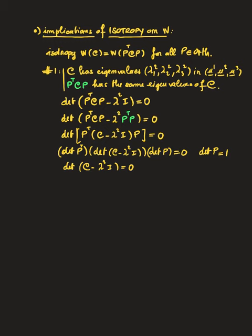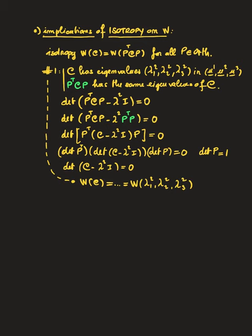So the eigenvalues of C are exactly the same as the eigenvalues of P^T C P — they are unaffected by rotations. The first consequence is that W(C) can be written simply as a function of the three eigenvalues λ₁², λ₂², λ₃². Initially we thought the energy depended on nine functions. By objectivity we reduced to six, and now by isotropy we pass from six to three.